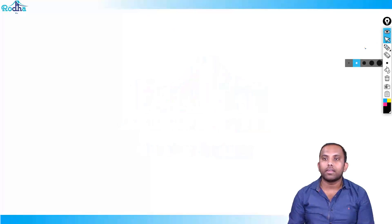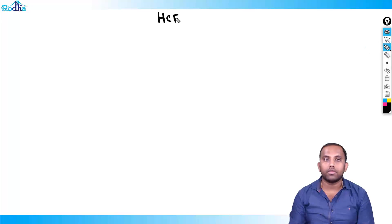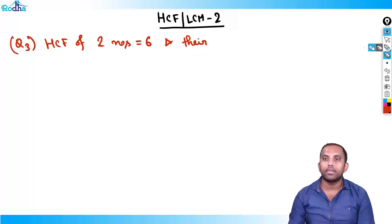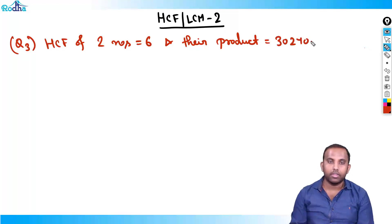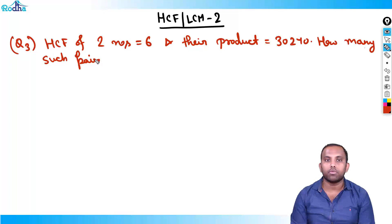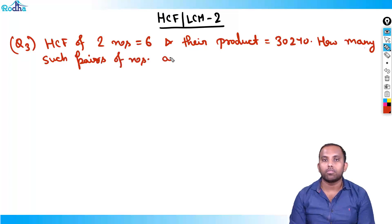Hi all, this is HCF LCM second class and we'll be continuing from last video. We'll do the third question. The third question is: HCF of two numbers is six and their product is equal to 30240. How many such pairs of numbers are possible?